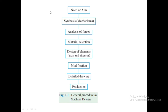The general steps in the design procedure begin with identifying the need or aim for developing the new machine. The mechanism behind the working of the machine is then identified, followed by analysis of the forces. Based on the forces and stresses calculated, materials will be selected and then the design is developed.